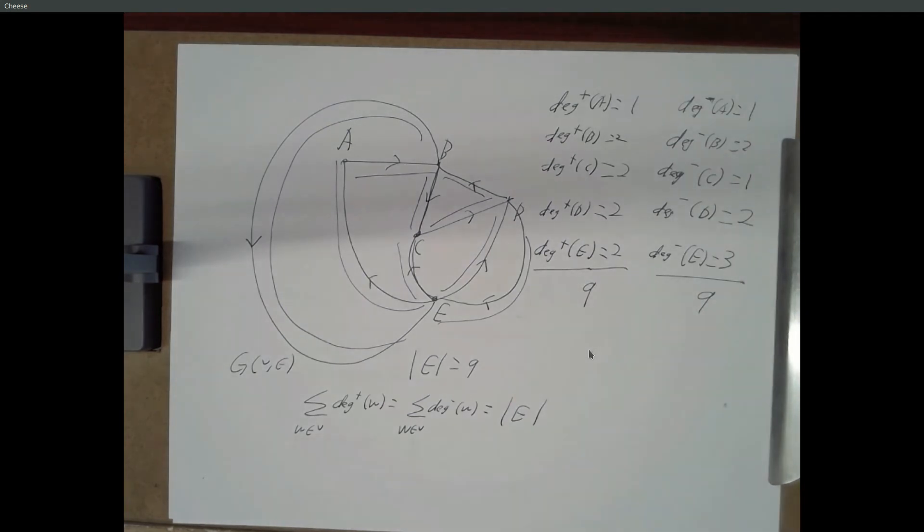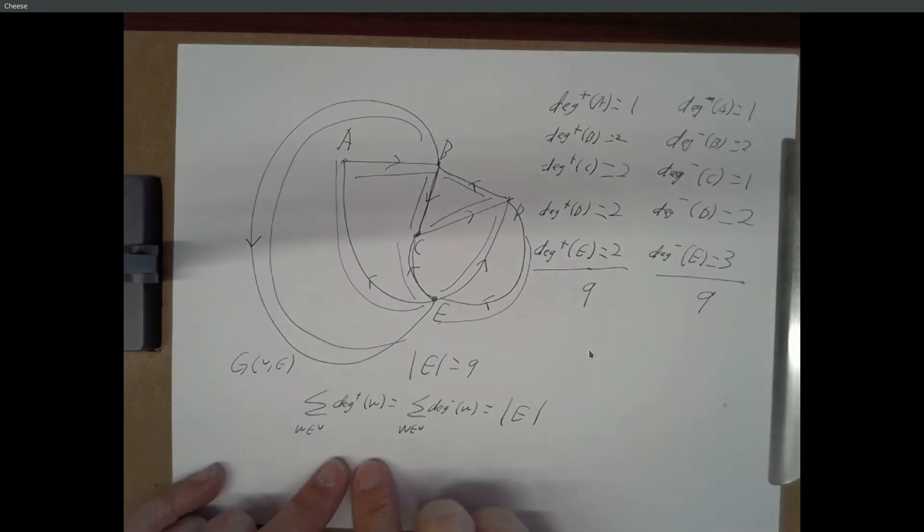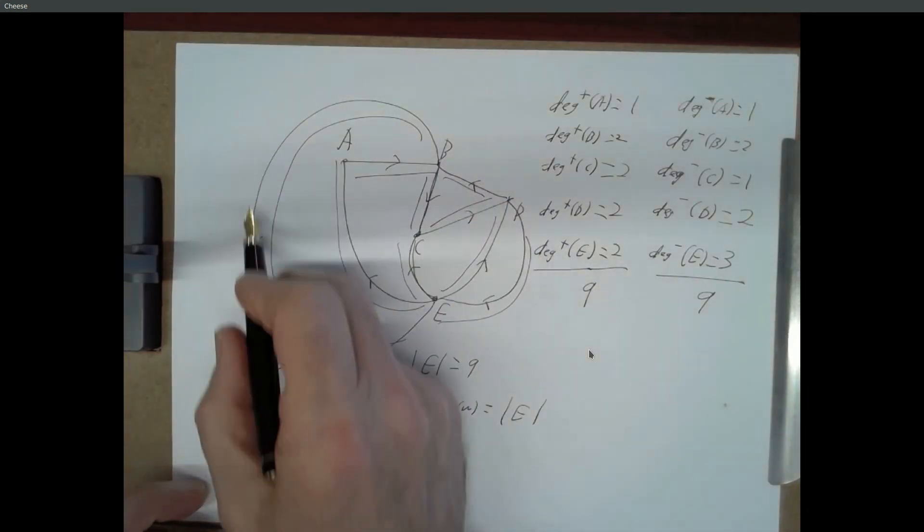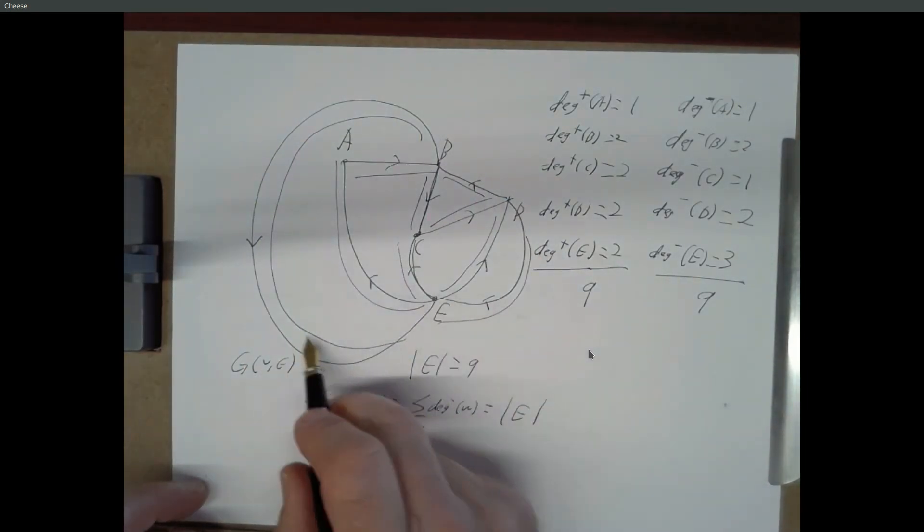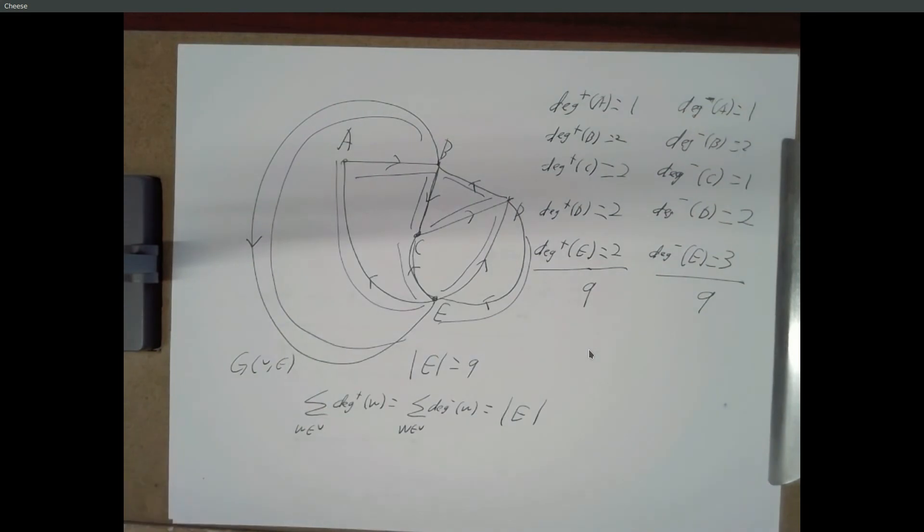Not multiplied by 2. Not multiplied by 2. Because this is really a generalization of that last theorem. Because if it's an undirected graph, then, let's see, how does this work? If it's an undirected graph, it would look like we had an edge going in this direction from B to E and another edge going in that direction from E to B.